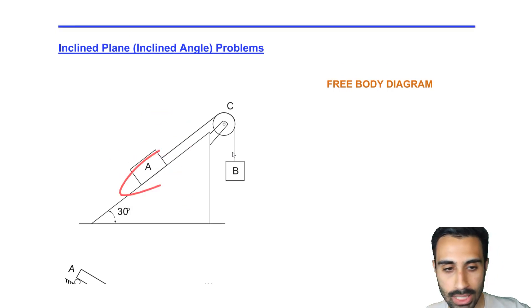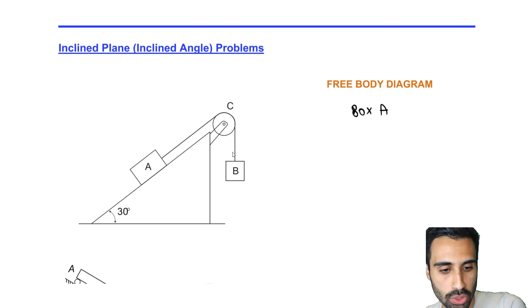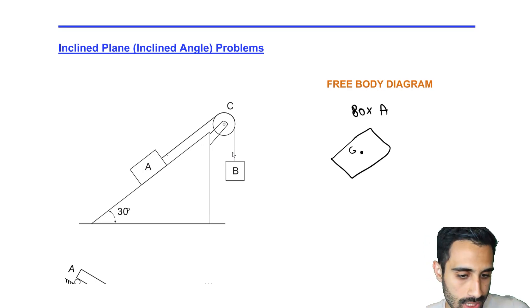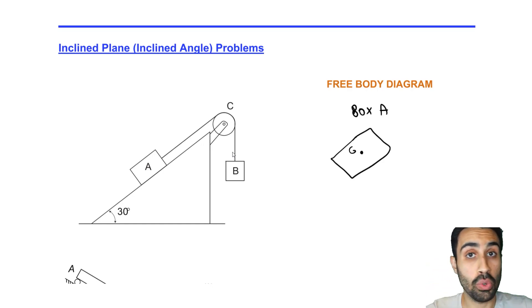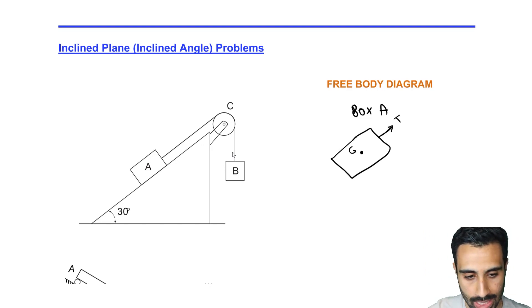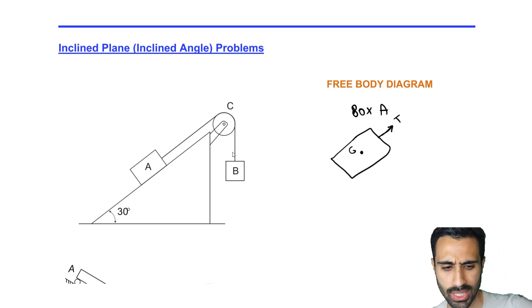We isolate box A and free it from its surroundings. Drawing it out, the box has a center of gravity G. We know tension in the cable is always directed away from the body, so we draw it going away and label it T.